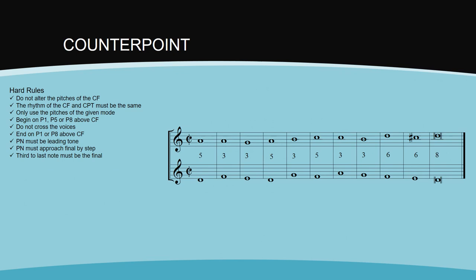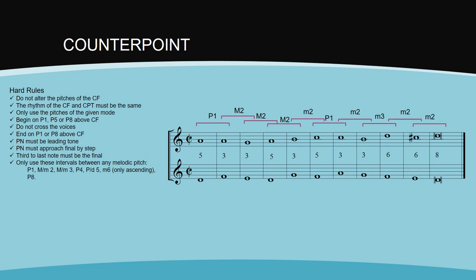There are some important melodic hard rules to keep in mind when writing your counterpoint. Use only the following melodic intervals: perfect unison, the major or minor second, the major or minor third, perfect fourth, perfect fifth, diminished fifth, major sixth—only use this one ascending—and the perfect octave.